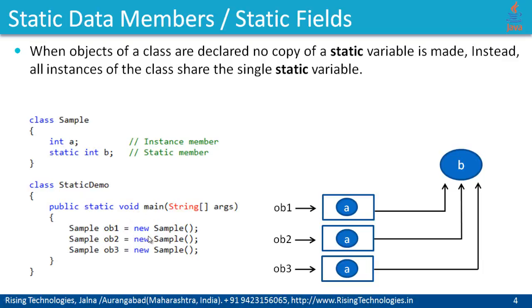We have just learned that instance members belong to specific instances of a class, but static members do not belong to any instance. There is only one copy of the static member shared by all instances. In the main program, I have created three instances of this sample class — object one, object two, and object three. Each instance has a separate copy of the member 'a', that is why it is called an instance member. But there is only one copy of variable 'p', shared by all instances.